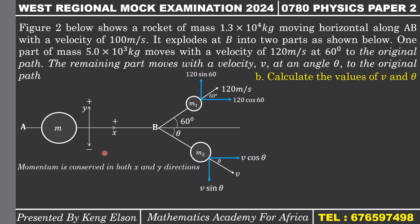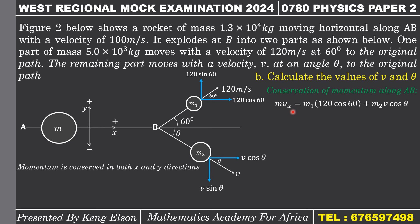The conservation of momentum applies in both the x and y directions, noting that momentum is conserved in each axis independently. Taking conservation of momentum along AB — the x-direction — initial momentum equals final momentum. Momentum is mass times velocity. The initial momentum is the mass of the rocket times its initial velocity of 100 m/s. The final momentum is the sum of the momenta of the two parts: m1 times its velocity in that direction plus m2 times its velocity in that direction.